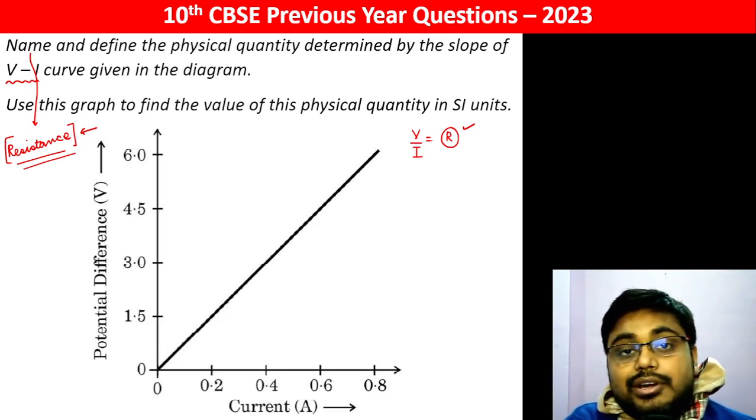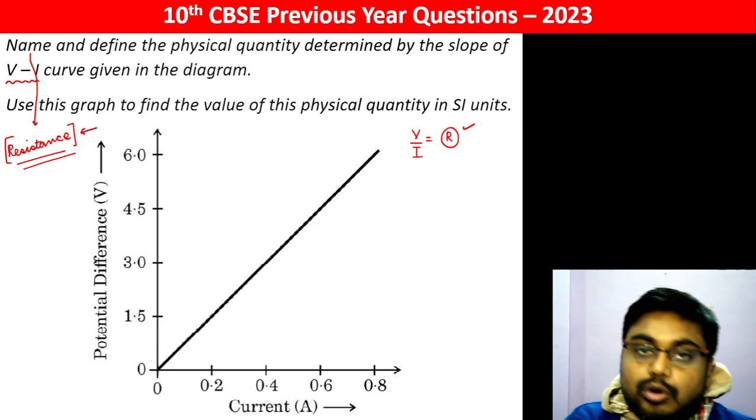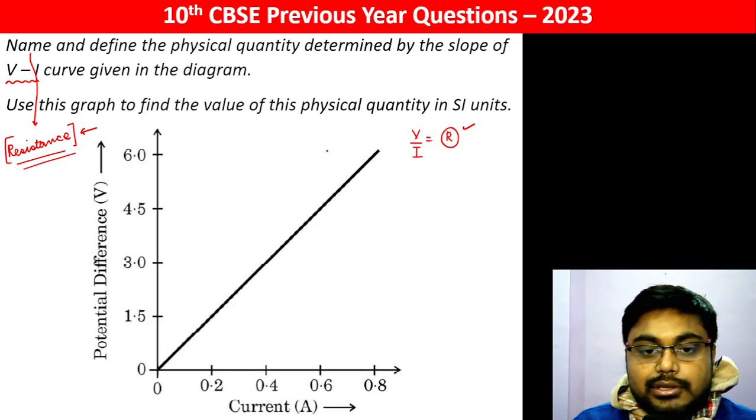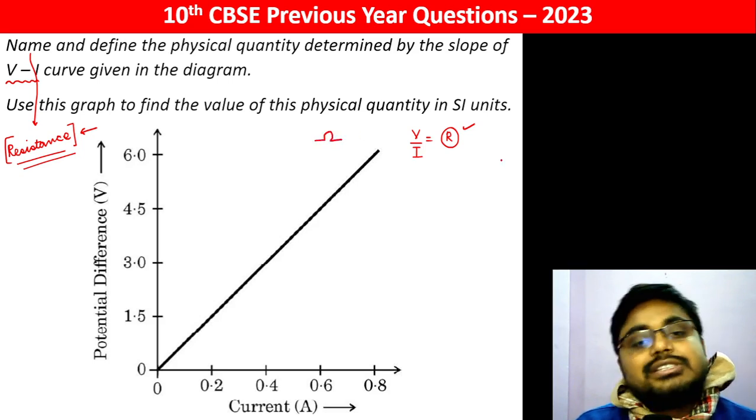That is the physical quantity. Its SI unit is ohms, and the symbol, we can see, is omega.